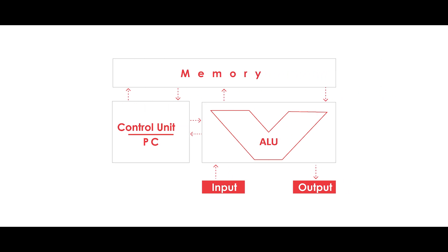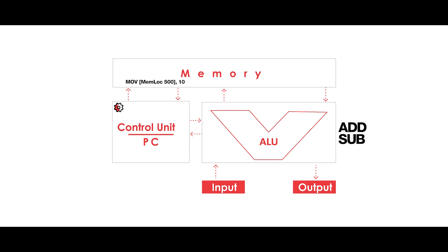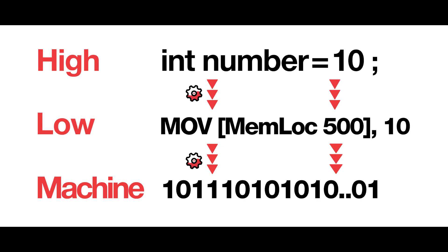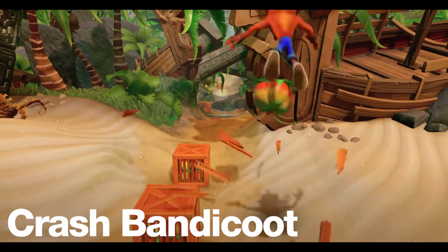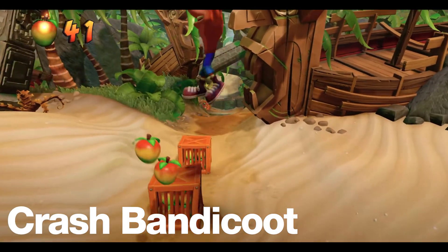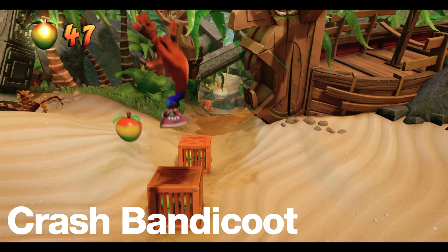The control unit fetches the instruction from RAM, decodes it, and thanks to the opcode, it executes it by writing the value to memory address 500. In this case we do not need the ALU as we are not doing any addition or subtraction. That is exactly how our computers understand and process our original line of code.